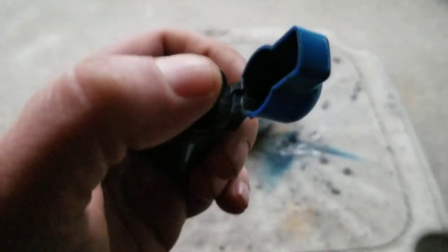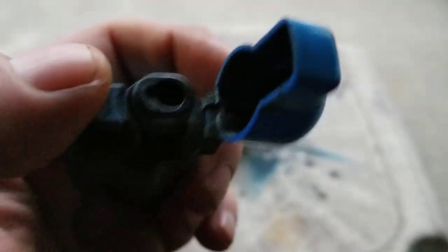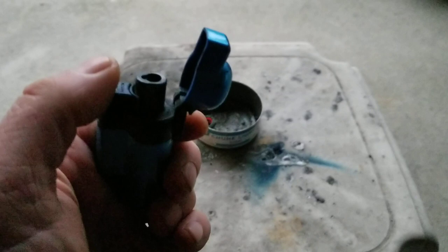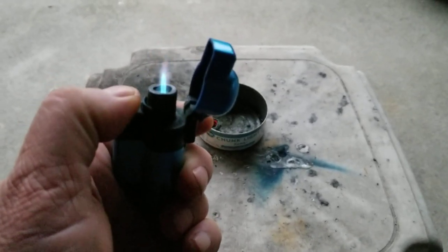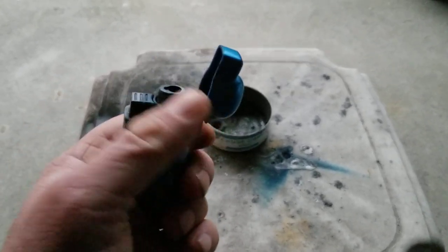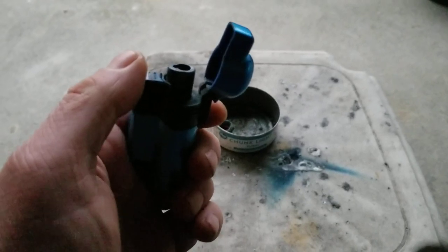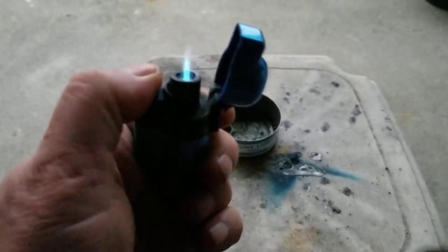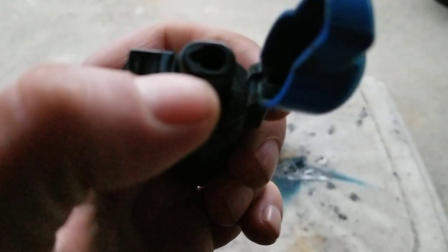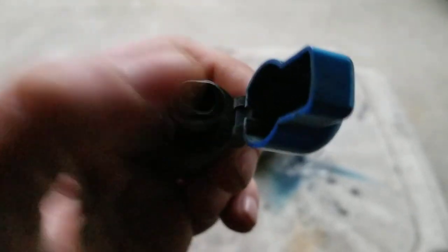So if you've got a lighter that has gas and the gas comes out, but it won't light and it clicks good, chances are your sparker came out of alignment or got dirty.